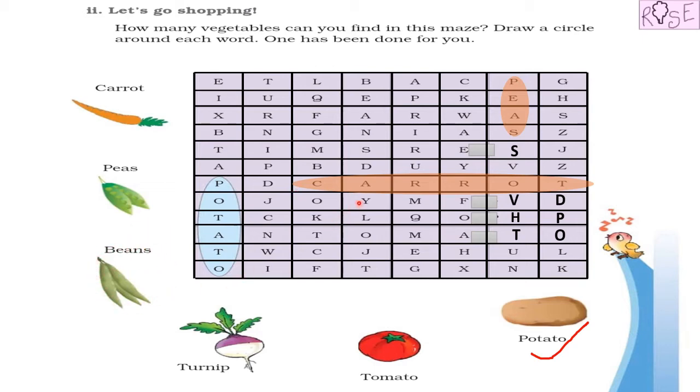Next one is beans. Yes, beans. So can you see the word beans in this maze? Oh yes, here is it. Let's put a circle here. Beans, very nice.